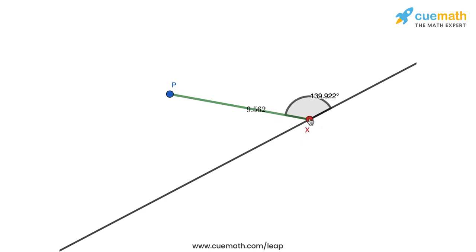So clearly the length of Px becomes the shortest when Px is perpendicular to the line. So this basically shows you that the shortest line segment that can be drawn from any point not on a line to that line will be the perpendicular line segment.